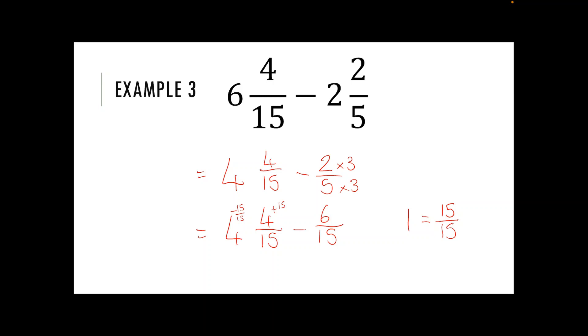So that's going to leave me with three whole numbers if I've taken one away. The four plus my 15 becomes 19 out of 15 take away six over 15.